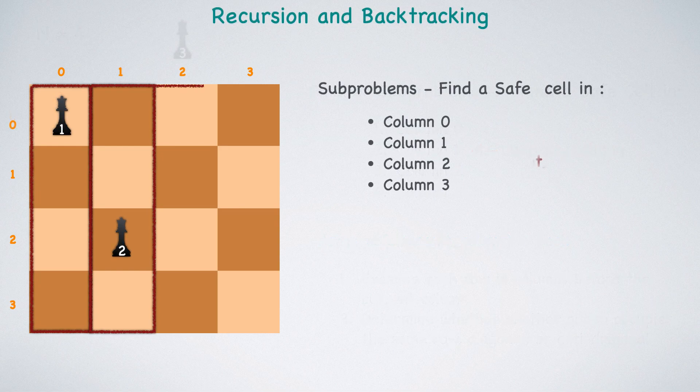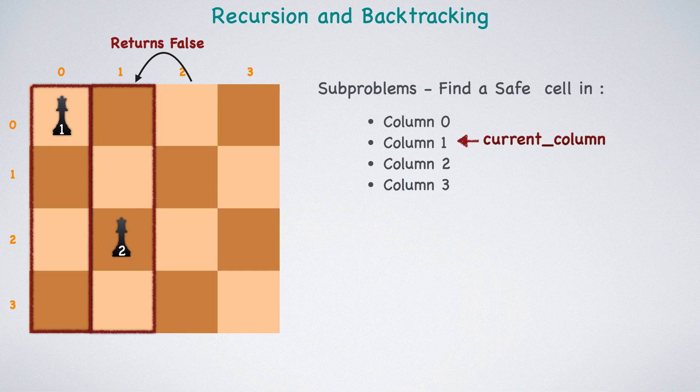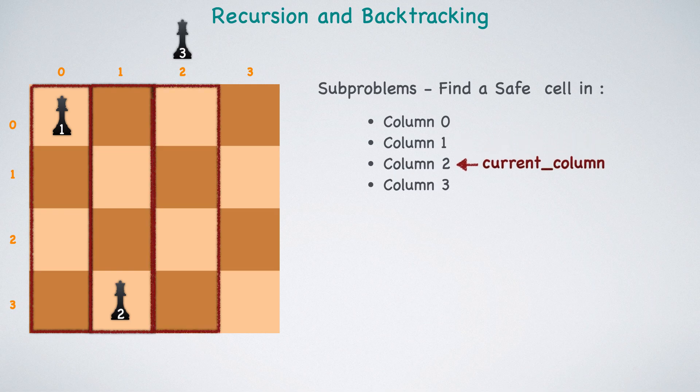Next, we will recursively solve the problem for the third column. None of the cells in the third column are safe because of either a row or a diagonal conflict. We backtrack by removing the third queen from the board and returning false to the function call for the second column. We will re-attempt to place the second queen in the next safe cell and once again tackle the sub-problem for the third column.